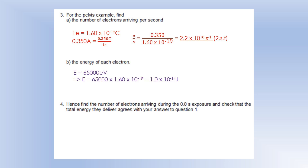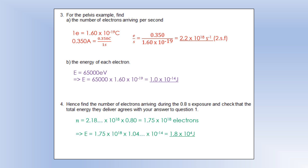To get the energy of each electron: it was accelerated through a potential difference of 65 kV, which means it ends up with 65,000 electron volts of kinetic energy. One electron volt is 1.6 times 10 to the minus 19 joules, so we can convert easily to get 1 times 10 to the minus 14 joules. The number of electrons during the 0.8 seconds of exposure is electrons per second times 0.8, giving 1.75 times 10 to the 18 electrons. Multiplying by the energy per electron confirms the total energy agrees with our earlier answer of 1.8 times 10 to the 4 joules.